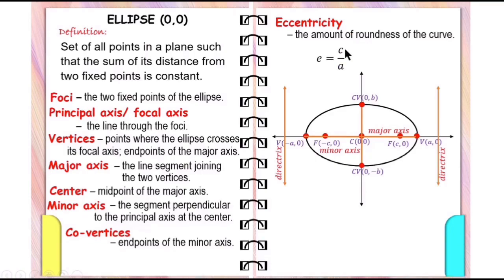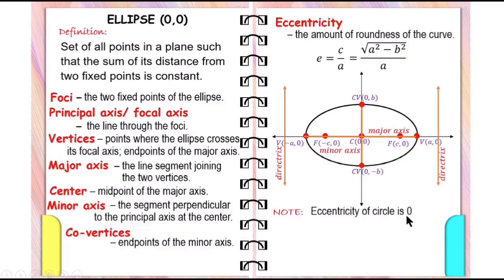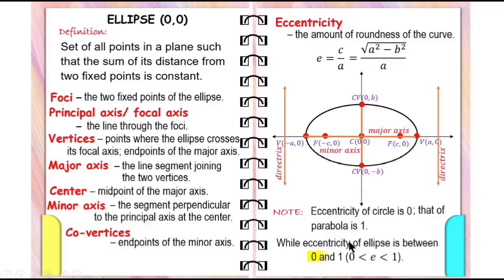Remember that eccentricity is the measure of the roundness of the curve. The eccentricity of an ellipse is e equals c over a, or the square root of a squared minus b squared over a. The eccentricity of a circle is zero and the eccentricity of a parabola is one, while the eccentricity of an ellipse is between zero and one. A small eccentricity indicates the ellipse tends toward being circular, and eccentricity close to one indicates the ellipse is elongated.